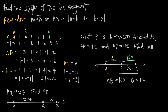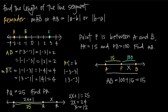We know that PQ is equal to 25, and we also know it's 2x plus 1. So if we set 2x plus 1 equal to 25 and solve for x: subtracting 1 from both sides gives us 2x equals 24, and dividing both sides by 2 gives us x equals 12. Since x equals 12, and the line segment QR equals x, we can say that QR is equal to 12.